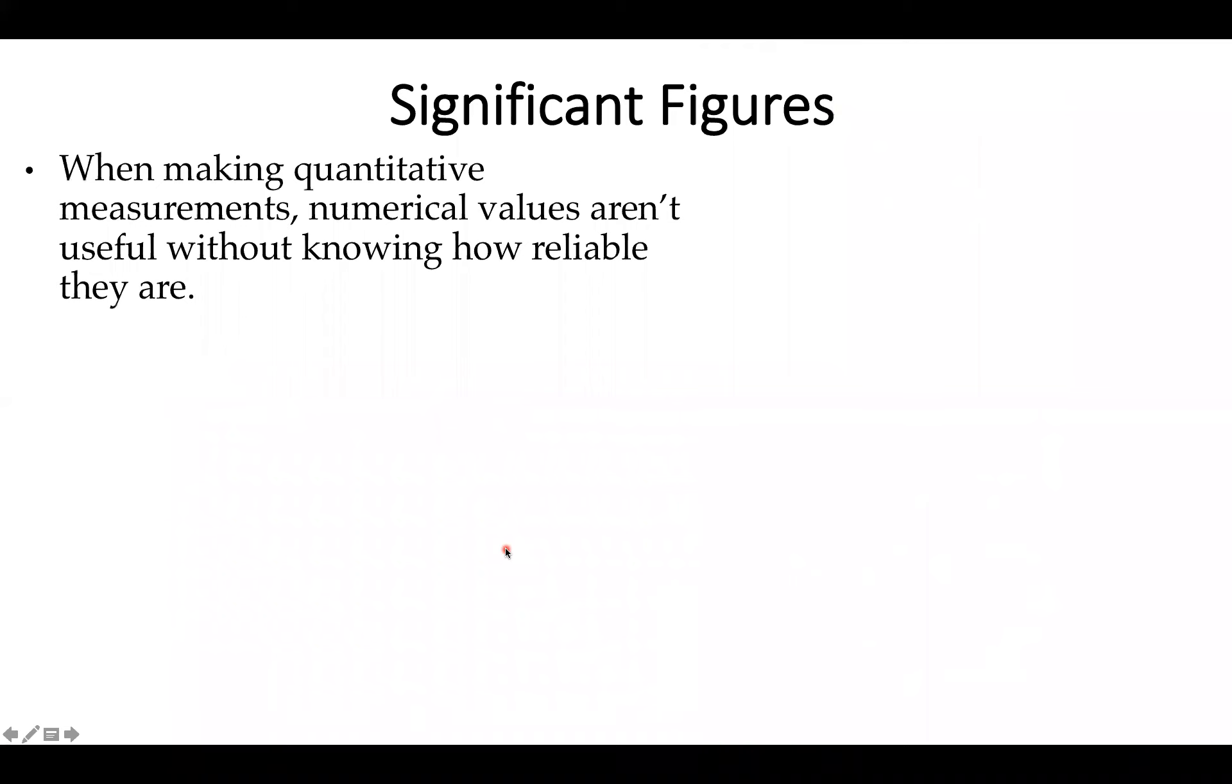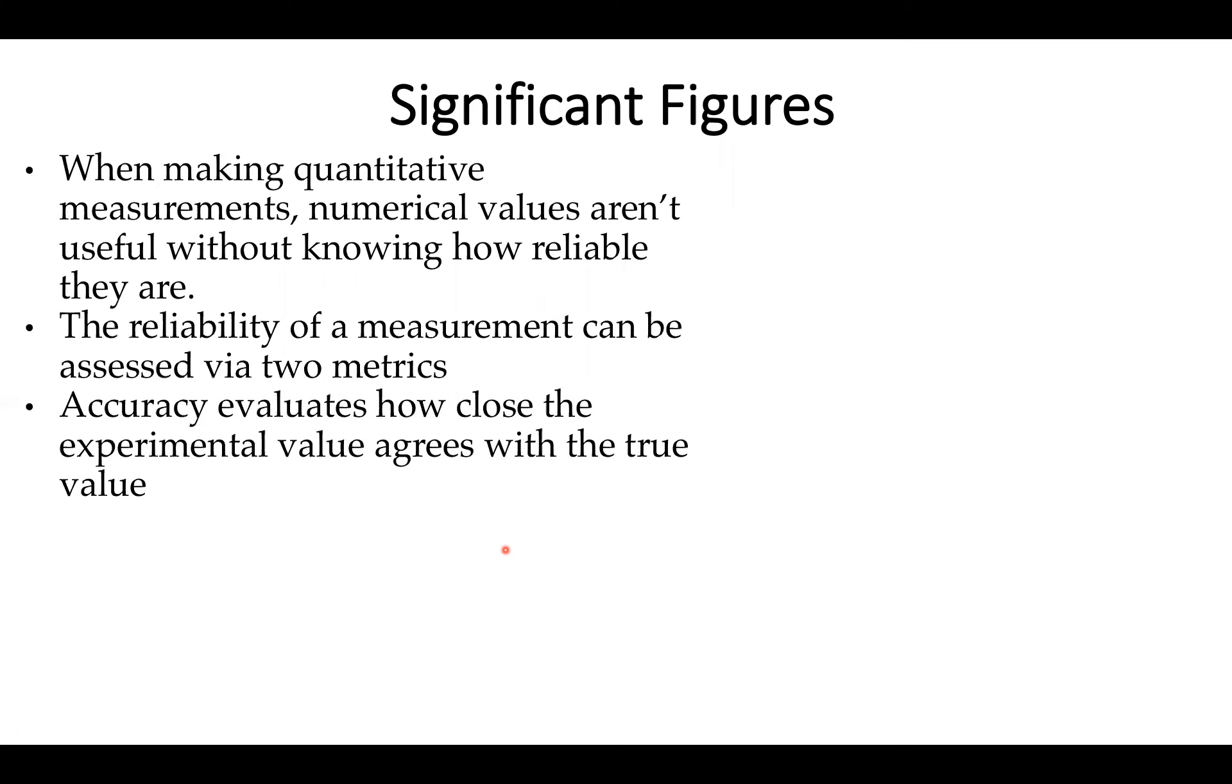One of the first things that we should always keep in mind is whenever we're dealing with any quantitative measurement our numerical values don't really mean anything unless we know how much I can rely on these numbers. And we tend to talk about the reliability of numbers in two slightly different metrics. The first of which is accuracy. Accuracy is entirely based on how well the experimental value agrees with whatever the quote-unquote true value is. One of the important things to keep in mind is that instrumentation is never quite perfect. Techniques are always vulnerable to error. So what you measure may not be what the system is truly at.